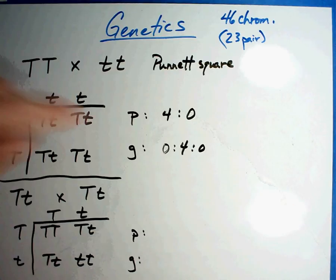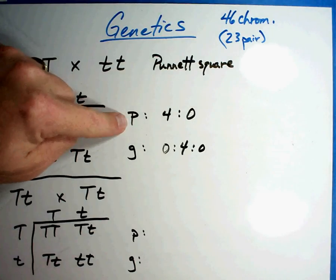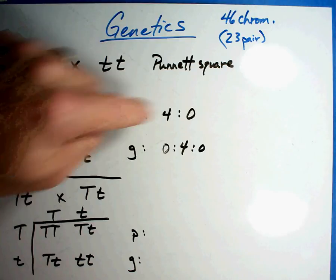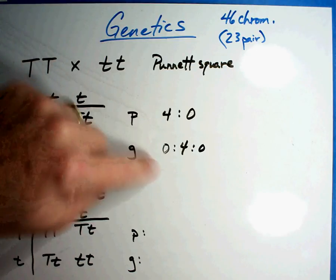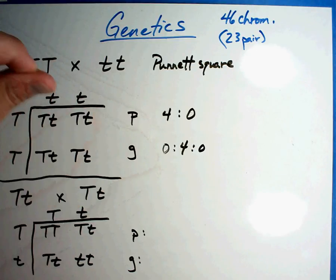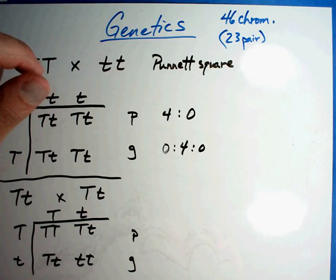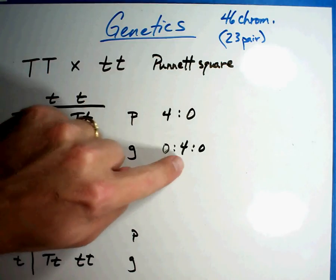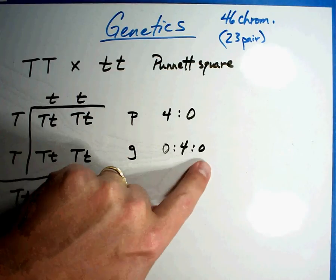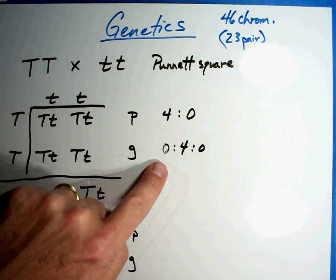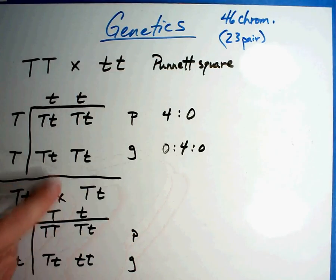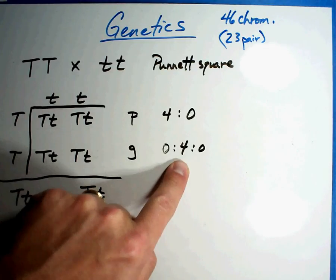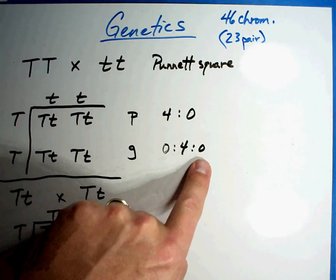Physically, what do I see? I see four tall plant offspring — none will be short. When I look at the genotype, which is what is in the genes: pure tall — I don't have any. Mixed tall — I have four of those. Short — none.